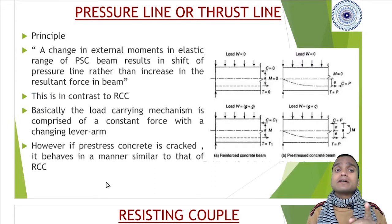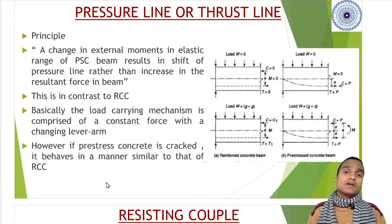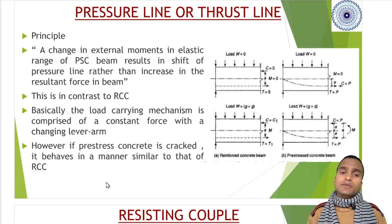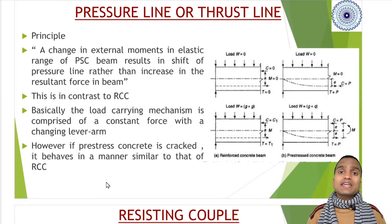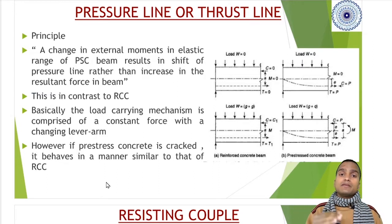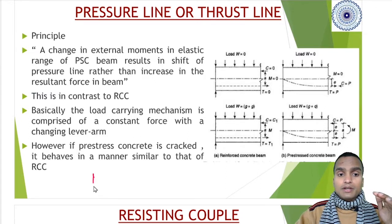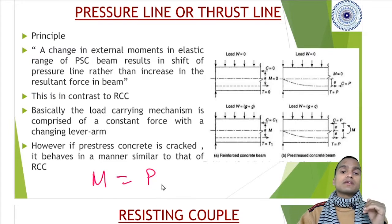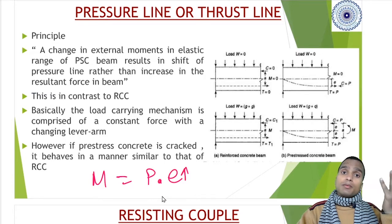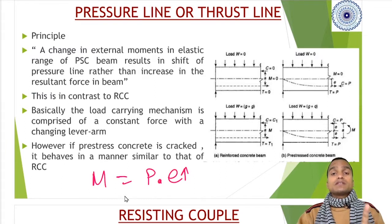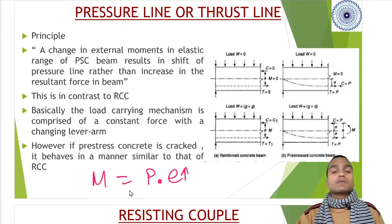This is in contrast with reinforced concrete beams. There is no increase of stresses or resultant forces in the beam. This is the load carrying mechanism - it is comprised of a constant force with a changing lever arm. Forces remain constant but lever arm keeps changing. This you can understand by the pressure line or thrust line method.